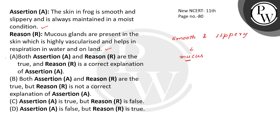The correct option here is option A. Both the assertion and reason are true, and the reason is the correct explanation of the assertion. Option B — reason is not a correct explanation — is incorrect. Option C — assertion is true, reason is false — is incorrect. Option D — assertion is false, reason is true — is also incorrect. The correct option is option A.